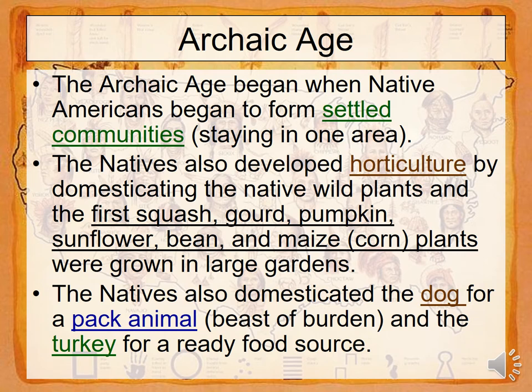In the Archaic Age, we start to see larger settlement communities and evidence of people settling in larger numbers in different areas. We see the development of horticulture — the development of very crops that will sustain them, like squash, gourd, pumpkin, sunflower, bean, maize, and so forth. One thing that is really interesting about corn is that it is one of the first genetically engineered crops ever. Corn used to be the size of a thumb, and ancient peoples slowly picked and selected different ones until they made corn the size it is today.